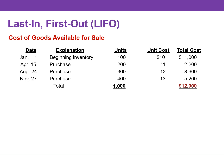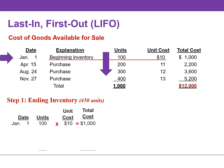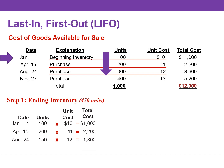Under LIFO, we determine the cost of the ending inventory by taking the unit cost of the earliest goods available for sale and working forward until all units of inventory have been costed or accounted for. We will price the 450 units of ending inventory using the earliest prices. The first purchase was 100 units at $10 on January 1st. We then work forward to the next purchase — 200 units at $11 — and then the remaining 150 units are priced at $12 per unit.